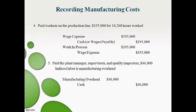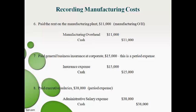The next transaction is to record direct labor worked on the production line. The first entry is made by the financial accountant and the second entry is made by the managerial or cost accountant, which moves the cost to be part of inventory. Manufacturing management costs are manufacturing overhead. We will combine the entries and record the cost directly to the temporary manufacturing overhead account. Rent is also recorded directly to manufacturing overhead.